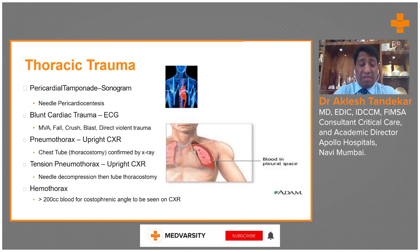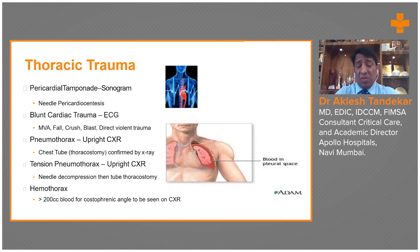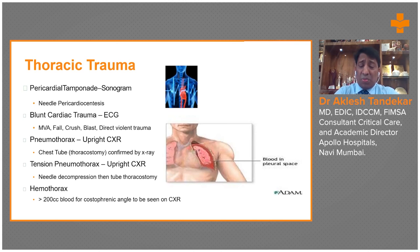Blunt cardiac trauma should be identified with ECG — it is usually seen in patients with motor vehicle accidents, falls, crashes, blasts, or direct violent trauma to the chest. Pneumothorax is identified with chest X-ray, and tension pneumothorax is the most life-threatening form. Needle decompression in the fifth intercostal space for adults and the second intercostal space for children is recommended. Once needle decompression is done, ICD insertion — tube thoracostomy — should be performed, as pneumothorax can recur once the needle is removed.